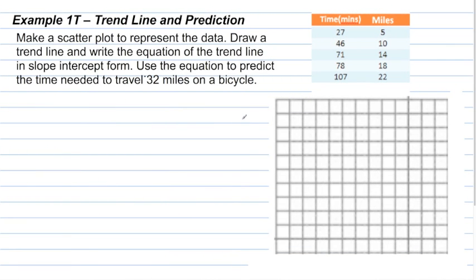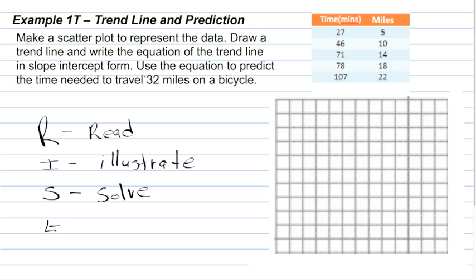Example one, trend line and prediction. The first thing you should do when solving a problem is rise up to the situation. What I mean by that is, R, you need to read the problem. I, you should illustrate the problem. You should then solve the problem. And finally, you should explain the problem. You should rise up to the situation.